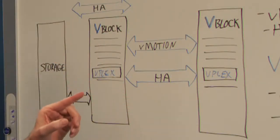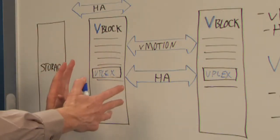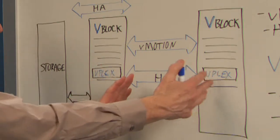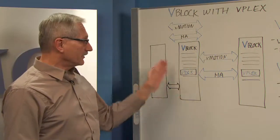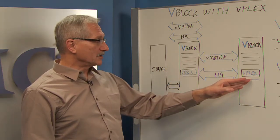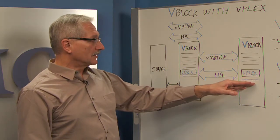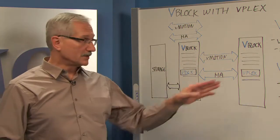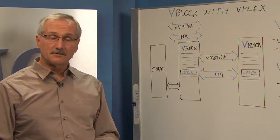HA, high availability, is not constrained now to running just within a single vBlock. We've stretched its ability to run across. So even if a whole site fails or just a server fails, another application instance can start running instantly on the other side. So we've really extended the capability here.